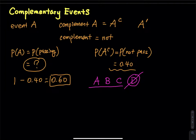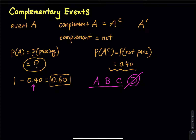You have everything, which is 1, and then you take out what you don't want, which is 0.4. So 1 is everything — you take out the 0.4, then the leftover is everything you want. You don't want D, so you take 1, subtract D, throw it away, and the leftovers are everything you want. That is the idea of complementary events.